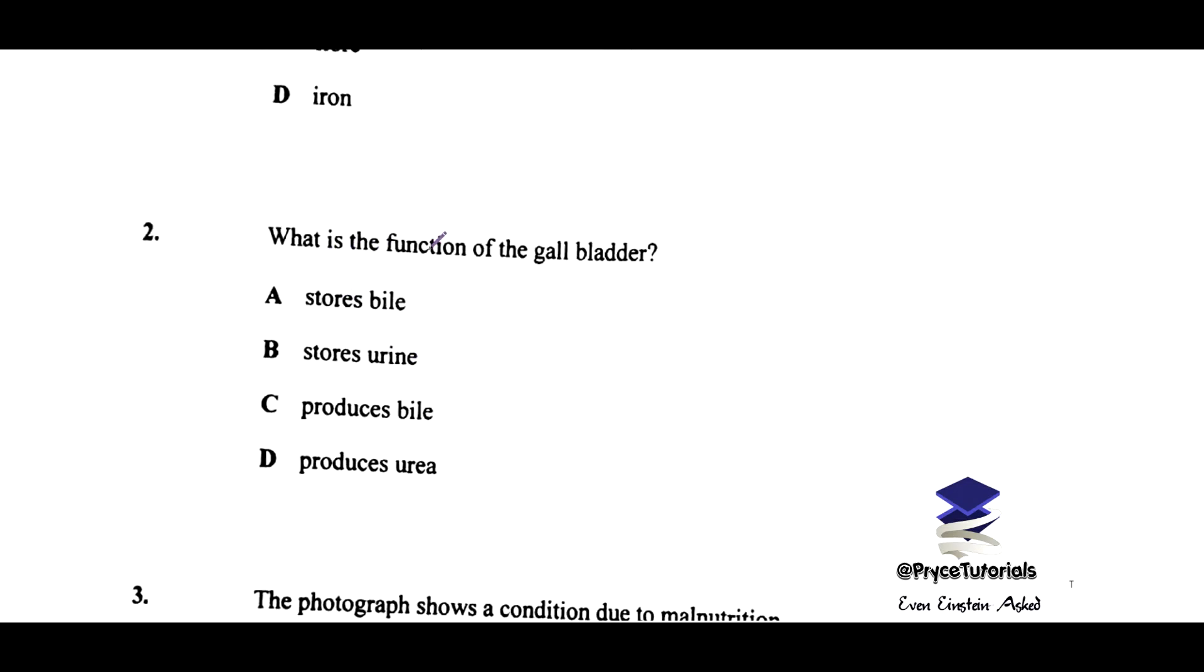Okay, they're saying what is the function of the gallbladder. The keyword here is the function. So the gallbladder stores bile. Urine is stored inside the bladder. Bile is produced by the liver, and urea is actually produced by the kidneys.